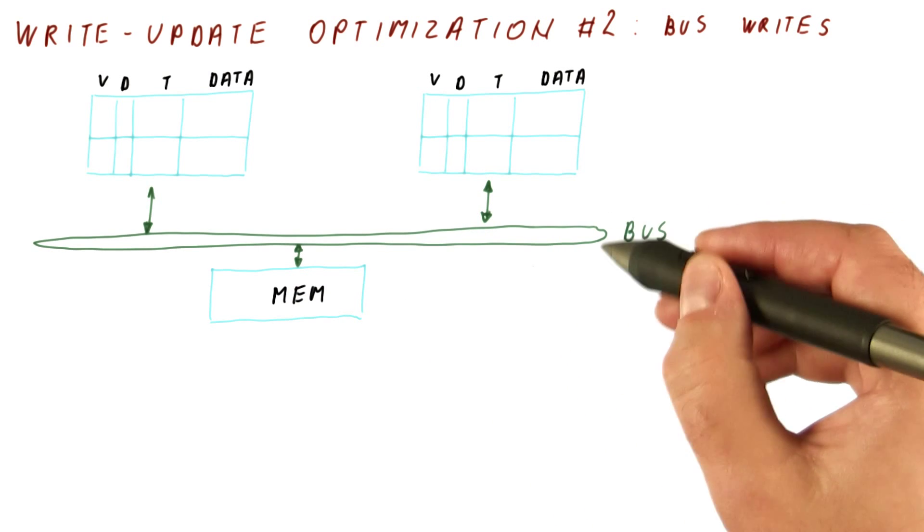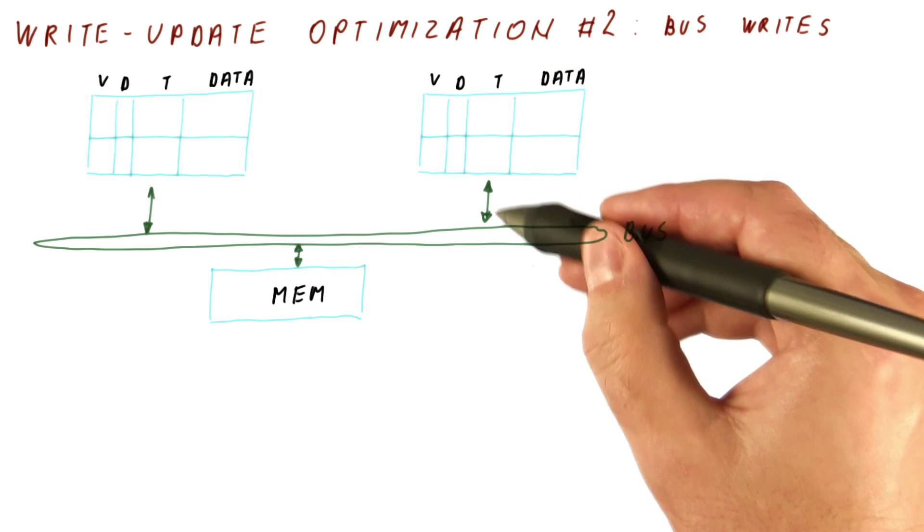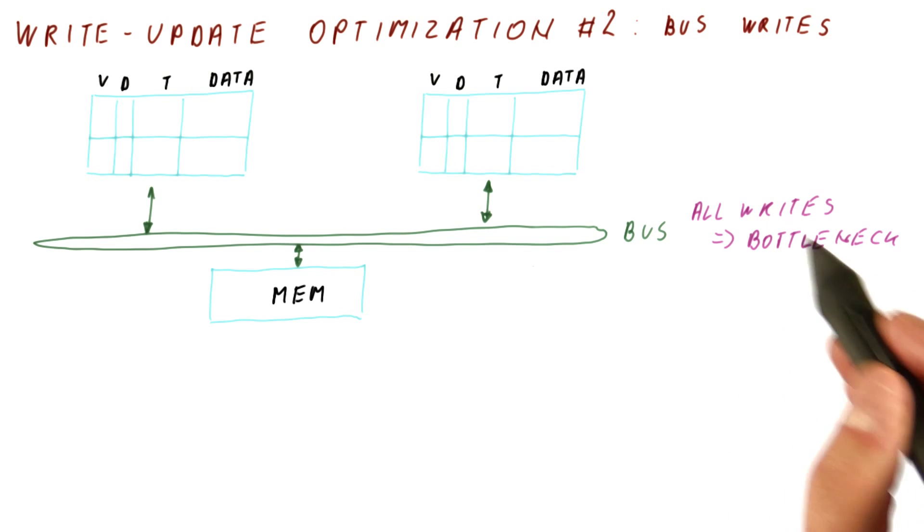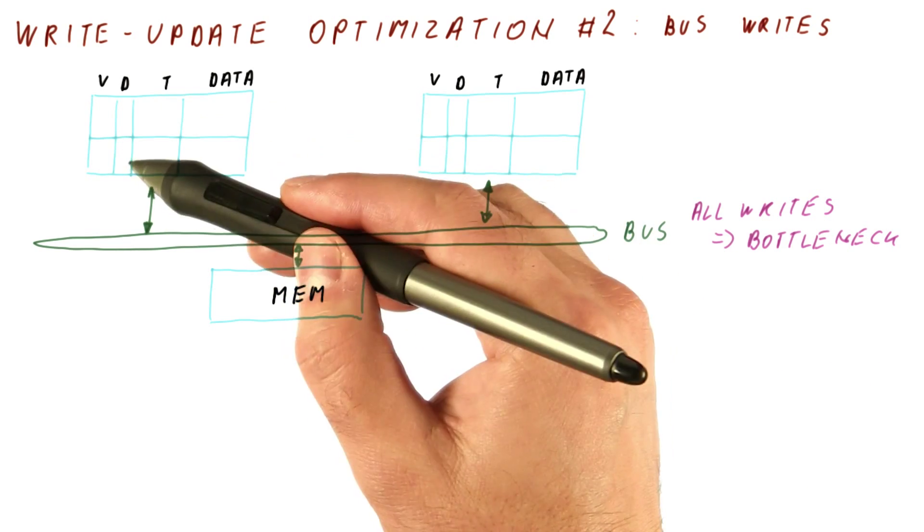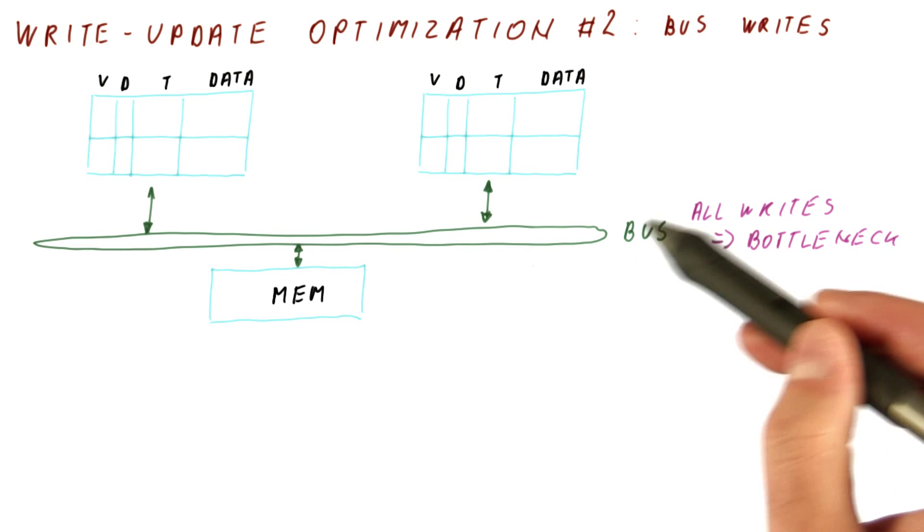But the bus still gets all of the traffic for all of the writes. Every single write will need to go on the bus and broadcast the value. So now the bus, which sees all of the writes, will become the bottleneck in this system. Because every single write from every single core ends up going to the bus, and the bus can only take so much.